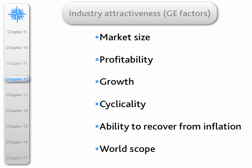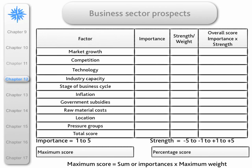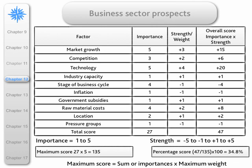We can do a similar thing for industry attractiveness — the GE one — where market size and other factors such as market factors, competitive factors, etc. are used. It's not prescribed what the factors should be; you decide them in relation to your own particular company. We put these in a table, attach a strength and a weight, sum that to get a score, and in this case our score is positive: plus 47. Our maximum score is 135, giving an actual percentage score of 34.8%.